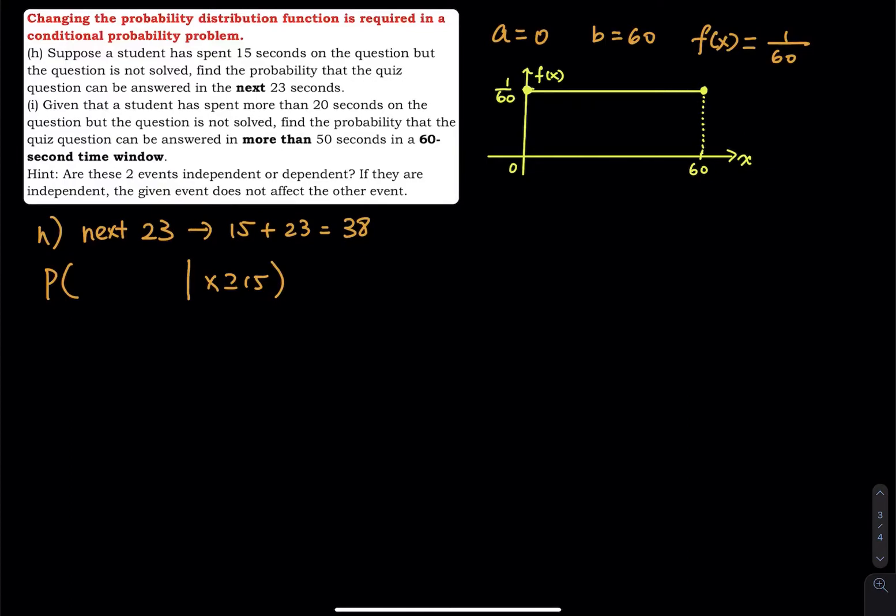Find the probability that the question can be answered in less than 38 seconds. So that is another way to replace the word next 23, all right? Next 23, that means you add 23 to it. So you see what the time window is.